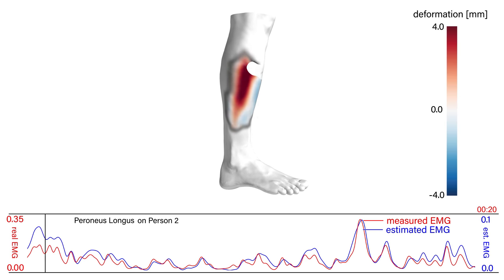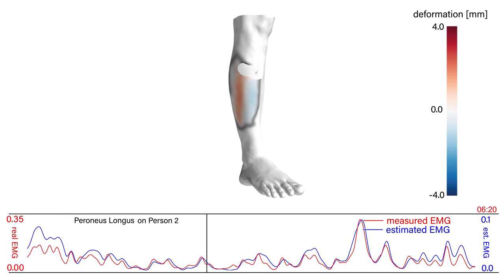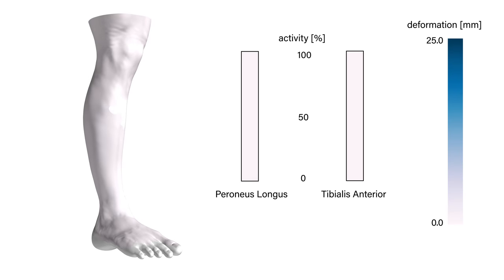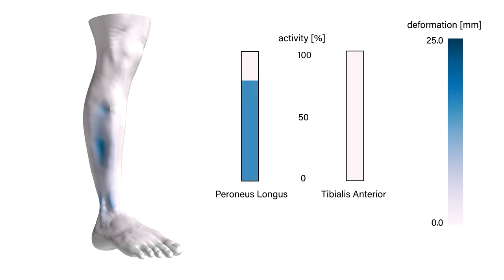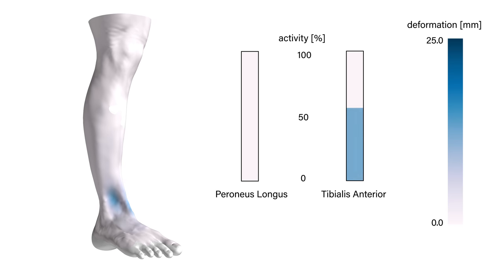These results can also be successfully applied to other muscles of the lower body — for example, the muscle peroneus longus. Additionally, our model can also be used to generate exaggerated muscle deformations. Here we show an exaggeration by the factor of 6 of the muscles peroneus longus and tibialis anterior.